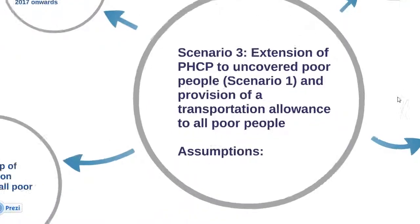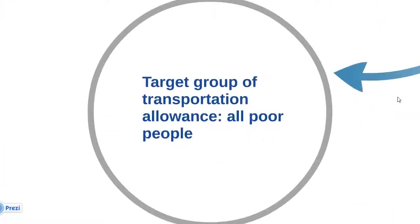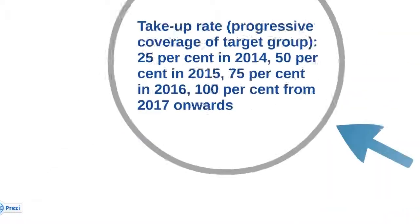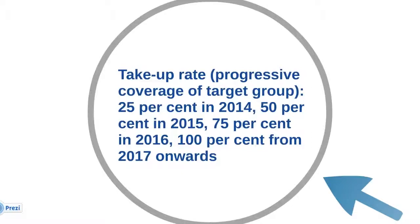The target group for the transportation allowance is all poor people in the country. The take-up rate is assumed to grow progressively from 25% in the first year of implementation — for example in 2014 — to 100% in 2017.